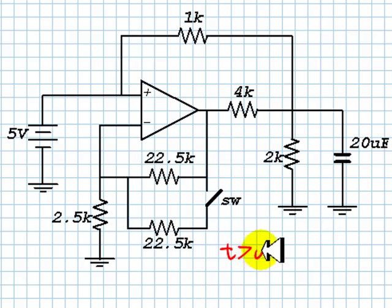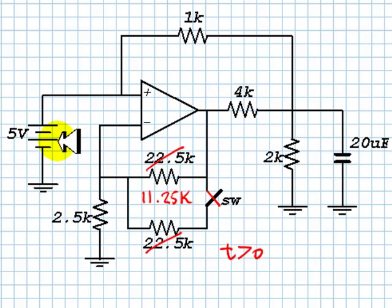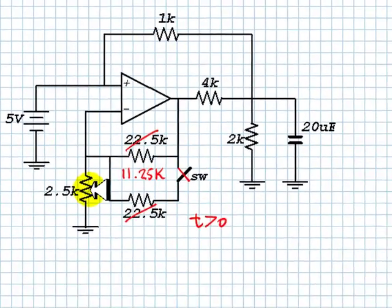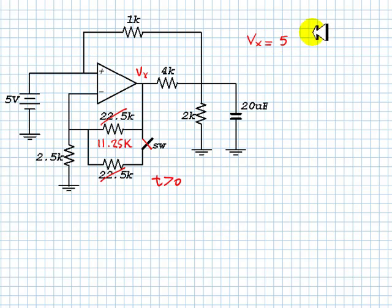After we close the switch for T greater than 0, the switch is closed and those two resistors are in parallel, giving us 11.25 kΩ. We realize that all of this is a non-inverting amplifier with an input of 5 volts. The output voltage is given by the non-inverting amplifier formula: input voltage 5, multiplied by (11.25 kΩ + 2.5 kΩ) divided by R1, which is 2.5 kΩ.